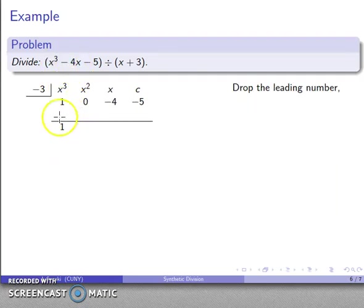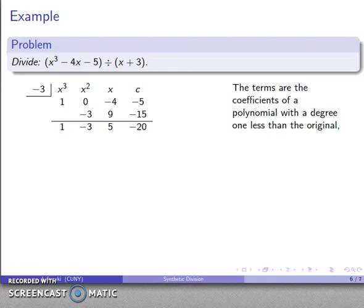I'll drop the leading number. I'll multiply: negative 3 by 1 is negative 3. I'll add: 0 plus negative 3 is negative 3. Negative 3 times negative 3 is 9. I'll add: negative 4 plus 9 is 5. I'll multiply: negative 3 by 5 is negative 15, and add: negative 5 plus negative 15 is negative 20. I've reached the last column, so now I am done with the synthetic division. And again, the terms I get here are the coefficients of a polynomial with a degree one less than what I started with, and the last term is going to be my remainder. So this is an x² column, this is x, the x column becomes a constant column, and that last column becomes my remainder.